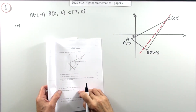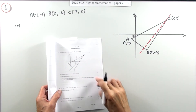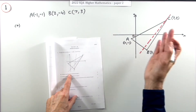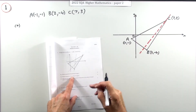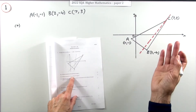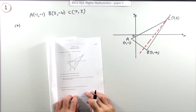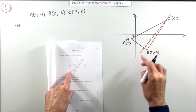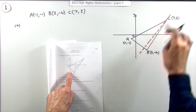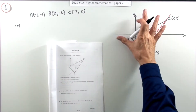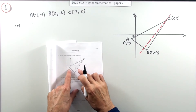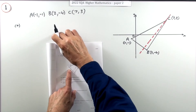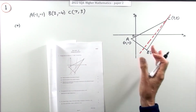Question one from the 2022 Higher Maths paper two, an eight-mark question on lines in a triangle. The standard question asks you to find the equation of one type of line — altitude, median, or perpendicular bisector — then find another, and then find their point of intersection. A diagram is provided so you can check your answers and compare gradients.